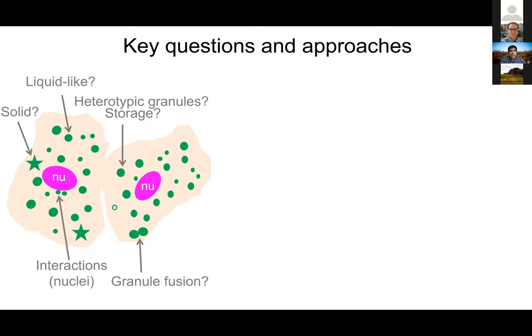These are some of the questions we had. We know these granules were present in the skin, but what are the material properties? Were they liquid-like, as perhaps suggested by the UCST behavior we predicted for filaggrin? Were they storing things? How were they interacting with other organelles within the cell? What is the composition? Some very fundamental biophysical questions, and then of course questions about mechanisms.